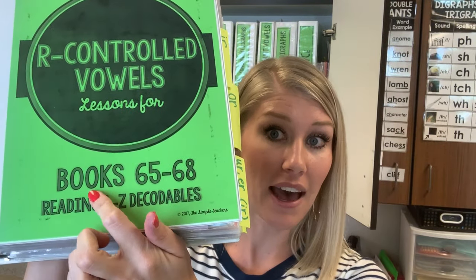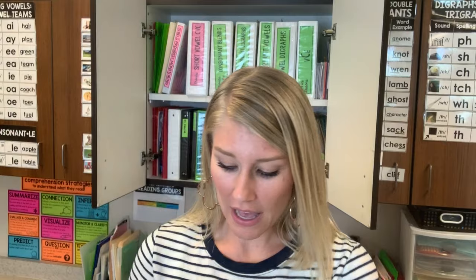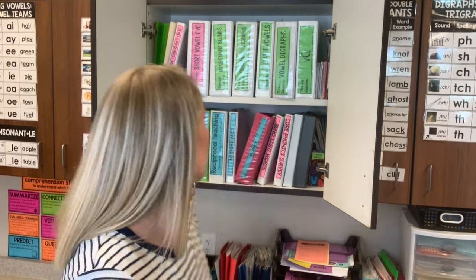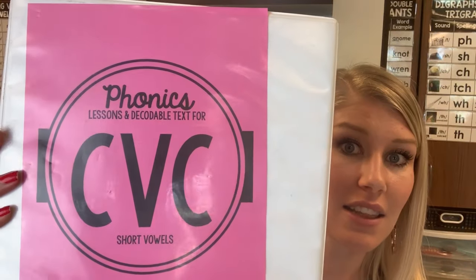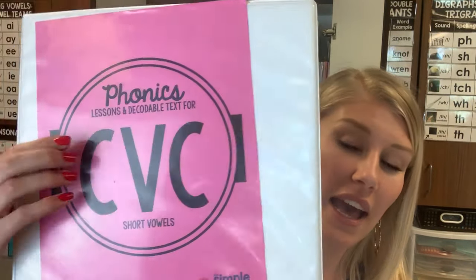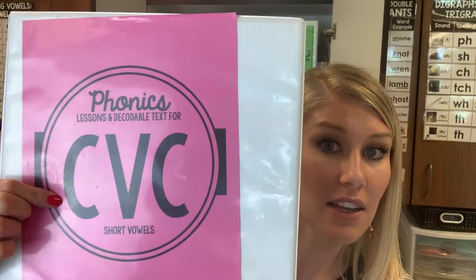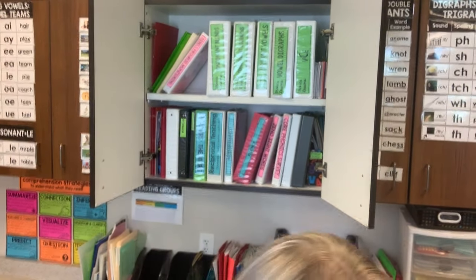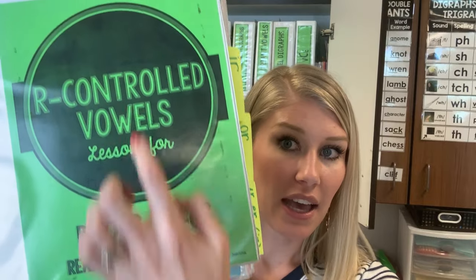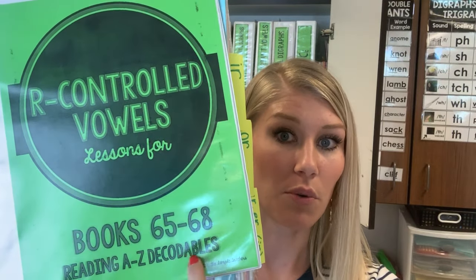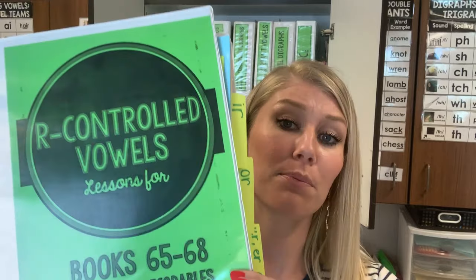These labels are actually in our Reading A to Z pack, but we do have labels for free if you just want to label them generically. This is my phonics binder and we have all the sound spellings that you would typically be teaching, along with the side binder labels. In our Reading A to Z pack we have binder labels for you — this one says 'books blank through blank.'